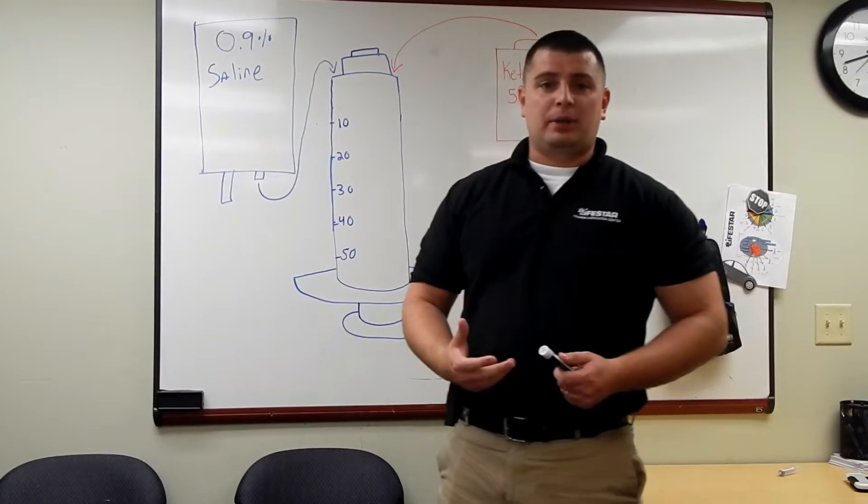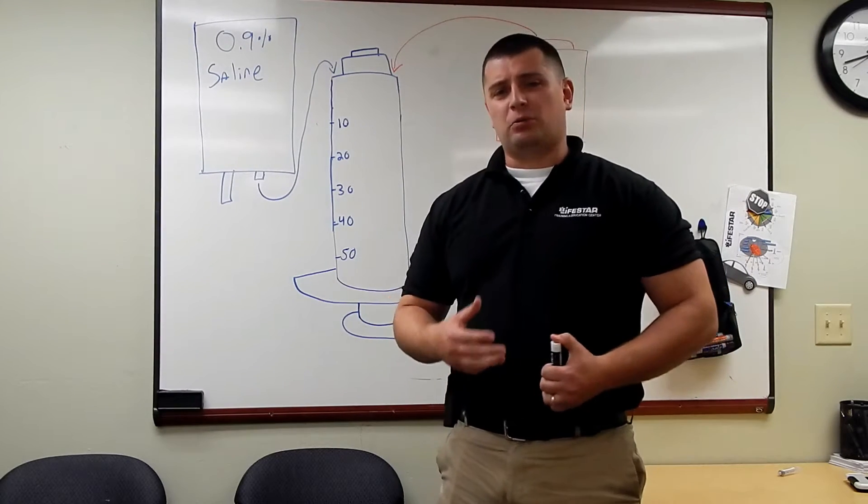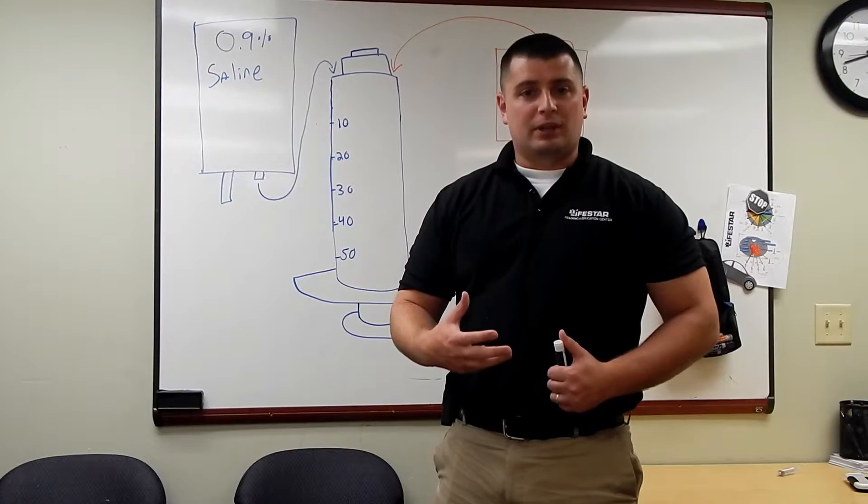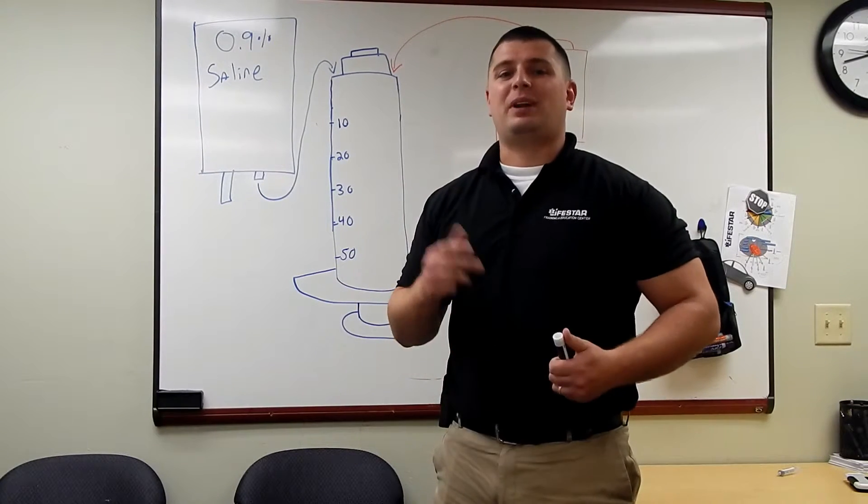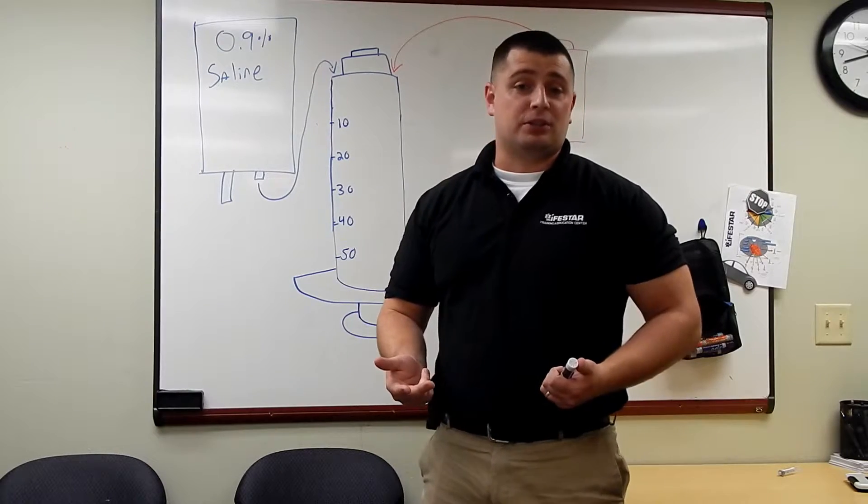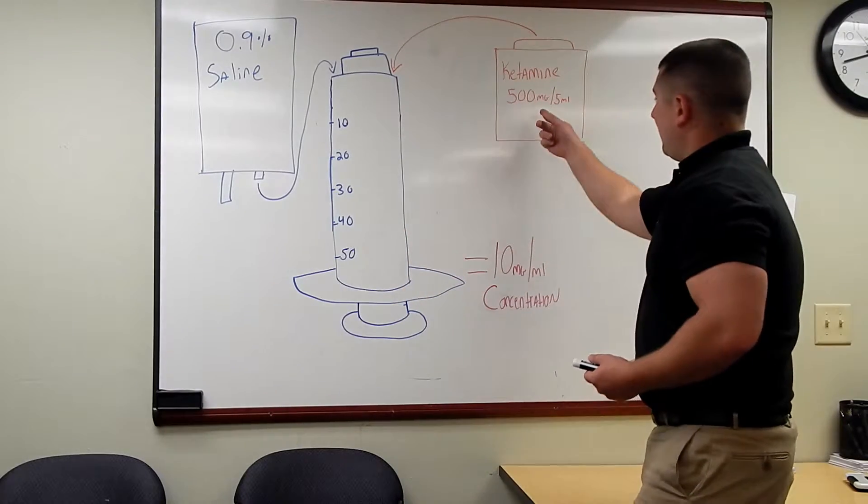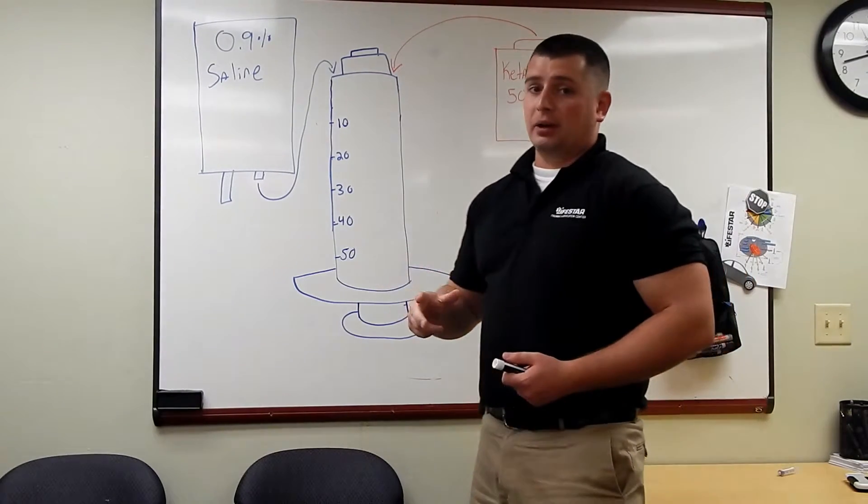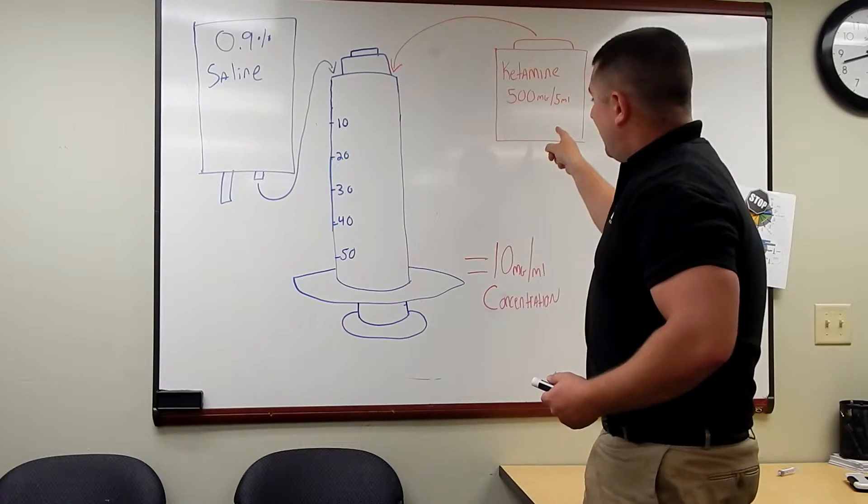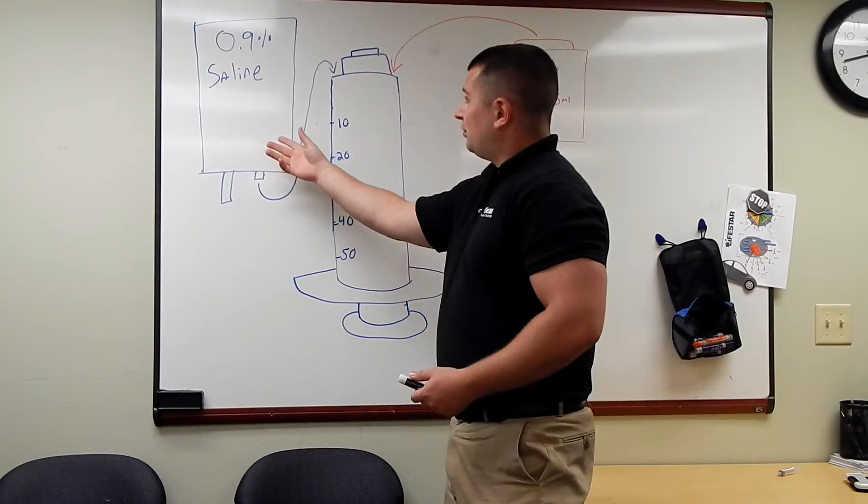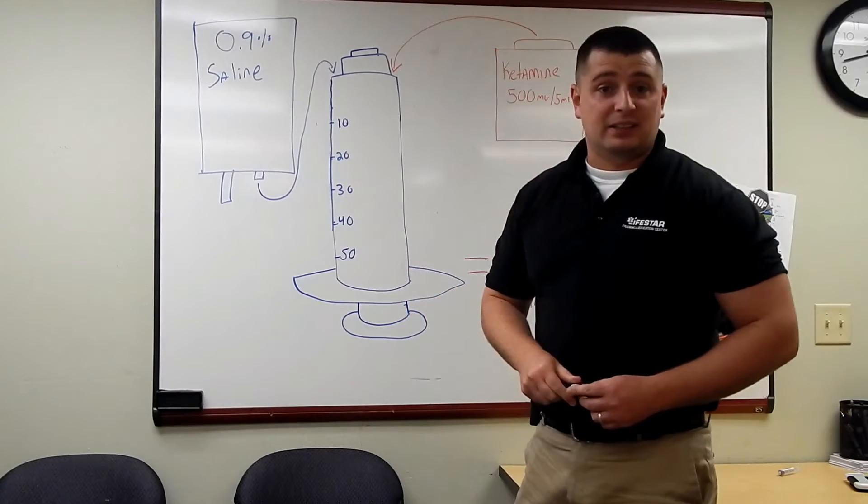To set up this ketamine drip, ketamine's got a really short half-life. So the goal is to give the bolus and then set up an infusion so you don't have to keep rebolusing the patient. We're going to take our normal ketamine vial, which is 500 milligrams in 5 mLs, put that 5 mLs in a 50 cc syringe, and then draw up 45 cc's of saline.